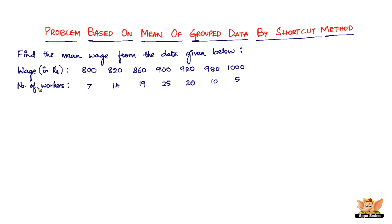Wage in rupees is 800, then the number of workers earning that is 7, 820 has 14, 840 has 19, 900 has 25, and so on.